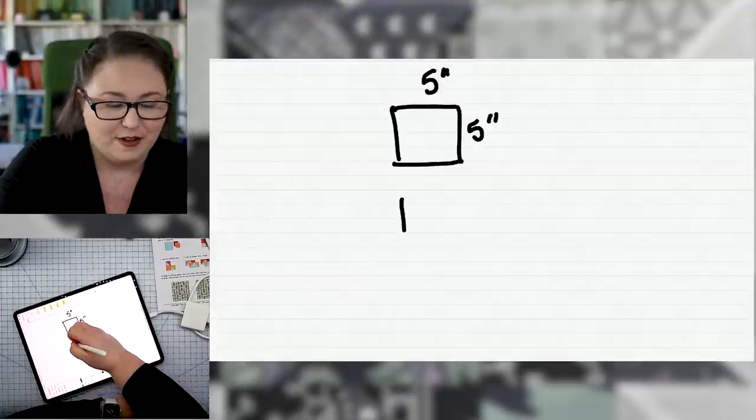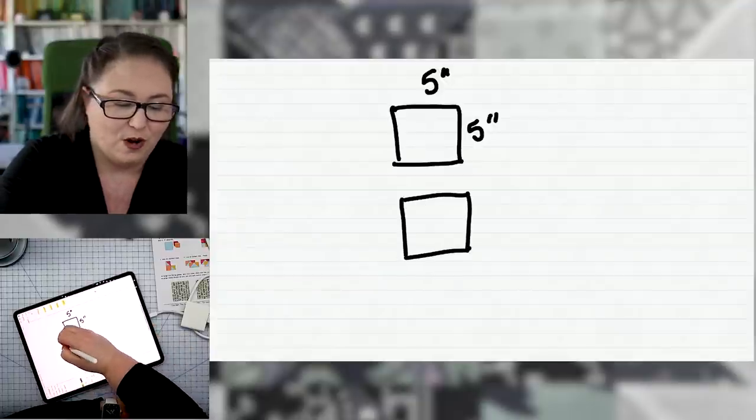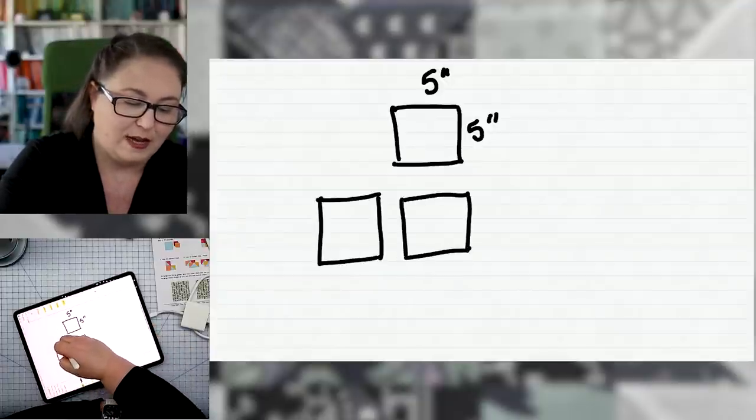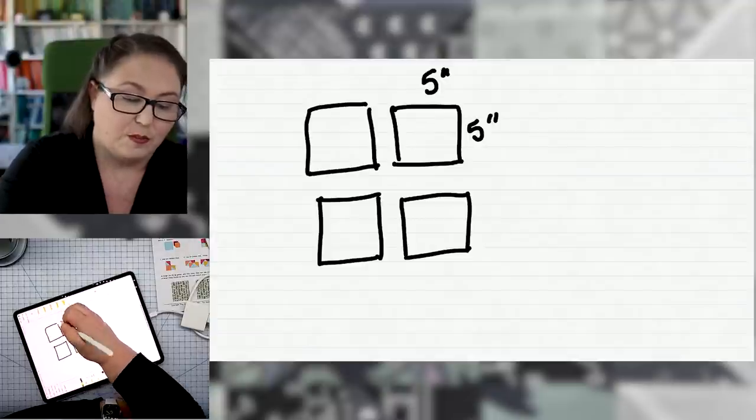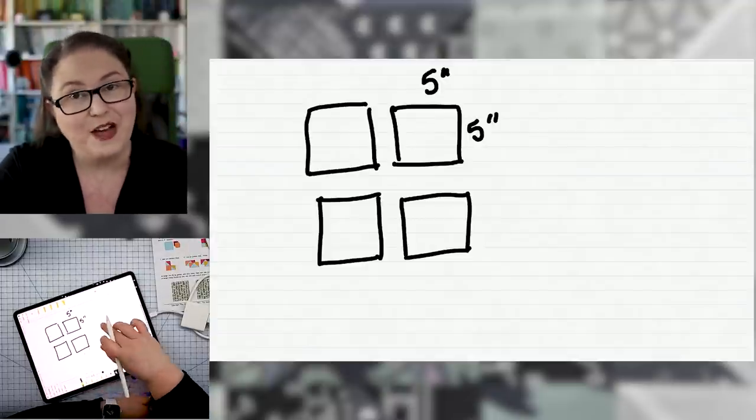When you are making four at a time flying geese, you use four squares that are the same size. And those are going to be my charm squares. So I'm going to use four five by five squares.